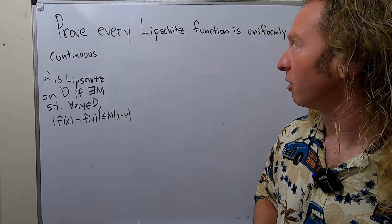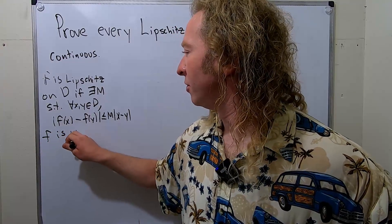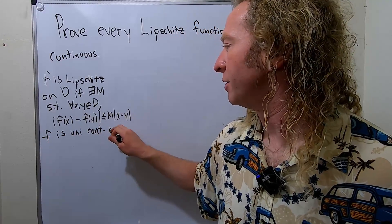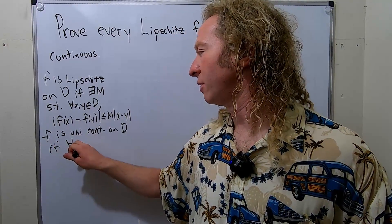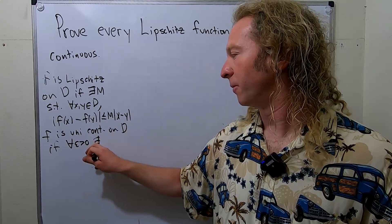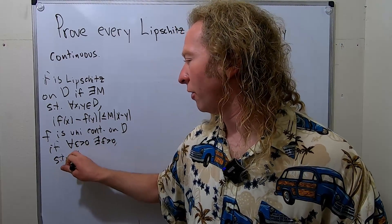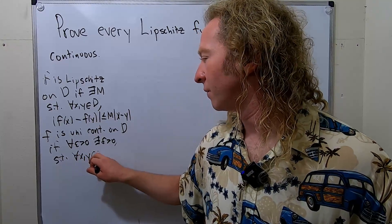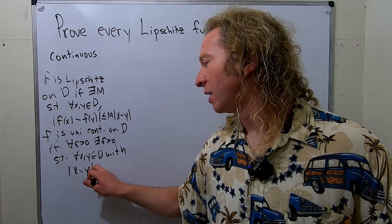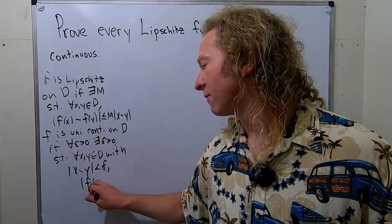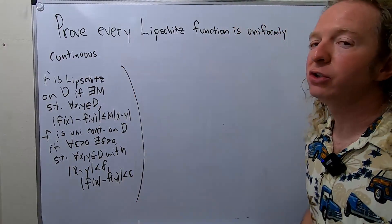Uniformly continuous is a little bit different. F is uniformly continuous on D if for all epsilon greater than zero, we can find some delta greater than zero such that for all x, y in D with |x - y| less than delta, we have |f(x) - f(y)| less than epsilon.